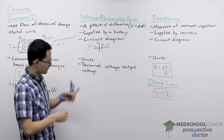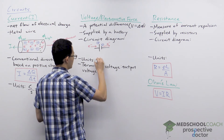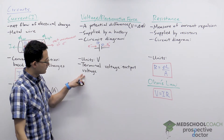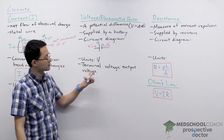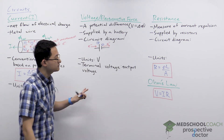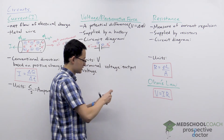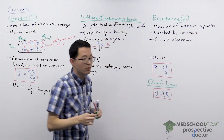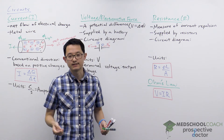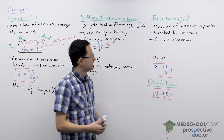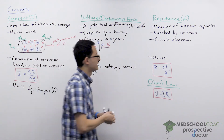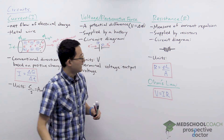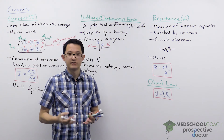Voltage or electromotive force has units of volts, which is the same as a joule per coulomb. We'll talk about terminal voltage in a bit — first let's look at resistance. Resistance, denoted by capital R, is a measure of current repulsion. In a circuit, resistance is supplied by resistors. The circuit diagram for a resistor is essentially a squiggly line, and you can connect all sorts of resistors with different resistances to your circuit.